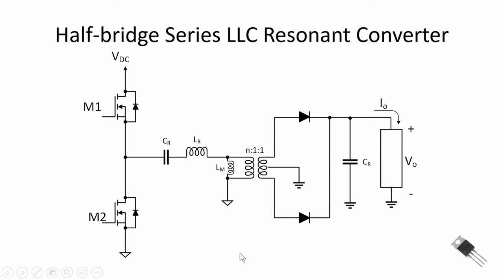The LLC resonant converter is similar to the series LC resonant converter with the addition of a shunt inductor L sub M. Typically, we design or have the transformer designed to include magnetizing inductance, and so it's not a separate component but part of how this transformer is designed. And there's reasons for adding or having that L sub M, that magnetizing inductance in the circuit, which we'll talk about in later videos.